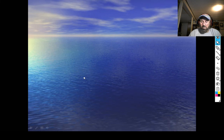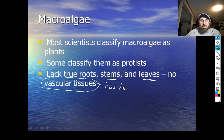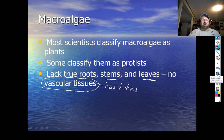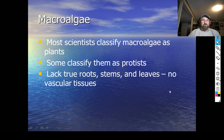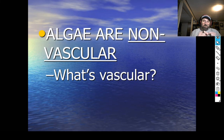Some call them protists, but more and more are calling them plants. One of the things I want you to understand is that they don't have roots, they don't have stems, they don't have leaves, and they don't have what's called vascular tissues. Vascular means that it has tubes that conduct materials throughout the organism. They don't have tubes — all of their cells exchange material because of their proximity to each other.